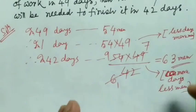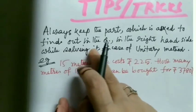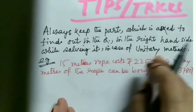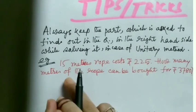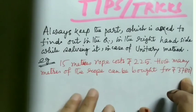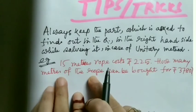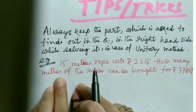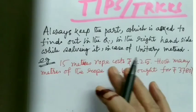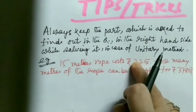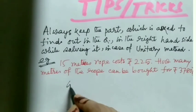Tip time: always keep the part which is asked to find out in the question on the right-hand side while solving it in the case of unitary method. For example: 15 meters of rope cost rupees 225. How many meters of the rope can be bought for rupees 3780? Here we have to find out length, so we keep length on the right-hand side and start with rupees.